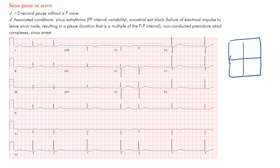Here's our heart from the box diagram — right atrium, left atrium, right ventricle, and left ventricle. The sinus node sits up in the upper right atrium. From there, internodal pathways go to the AV node, a Bachmann bundle goes to the left atrium, and the His bundle subdivides into the right bundle branch and the left bundle branch with the left anterior and posterior fascicle. That's where sinus arrest originates — the sinoatrial node.